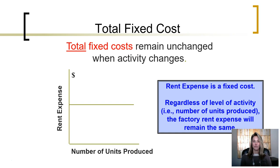So let's look at fixed costs first. If we were to take all of a company's costs and reorganize them — instead of by their type, reorganize them by behavior — total fixed costs would be the total costs that remain unchanged when activity changes. For example, rent expense.